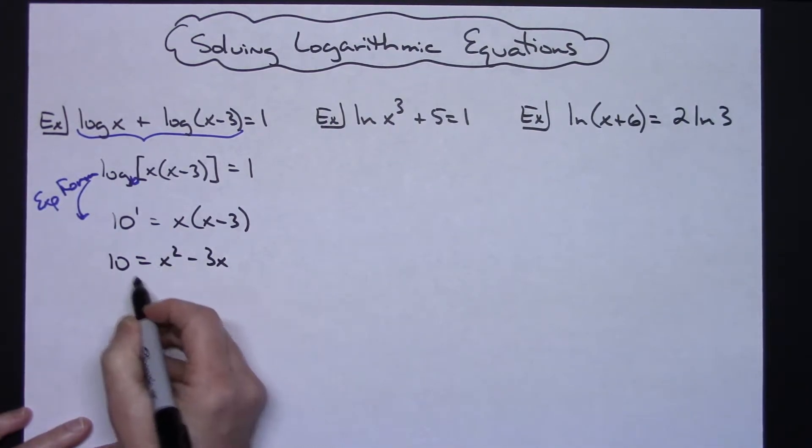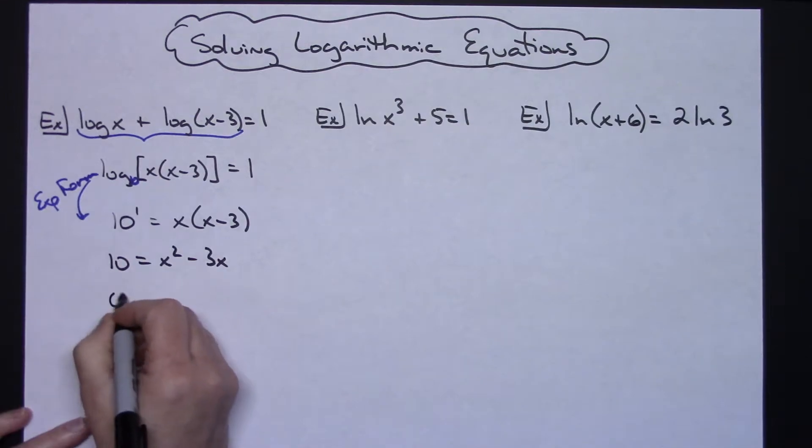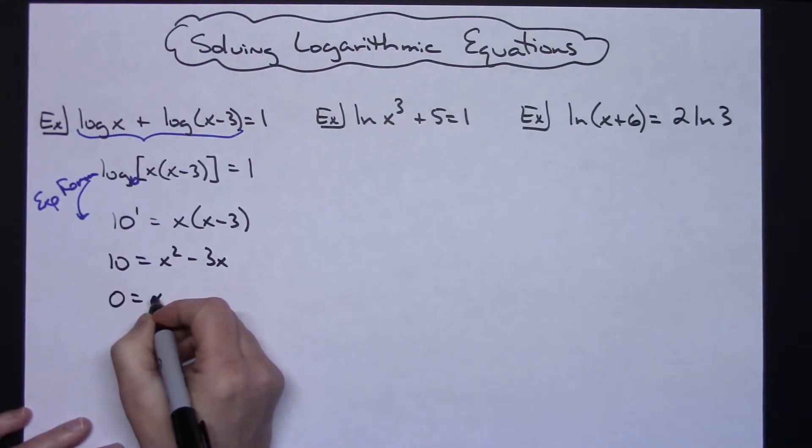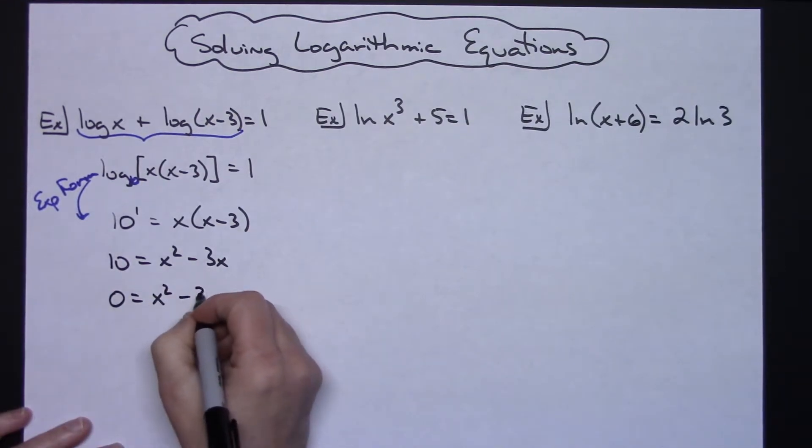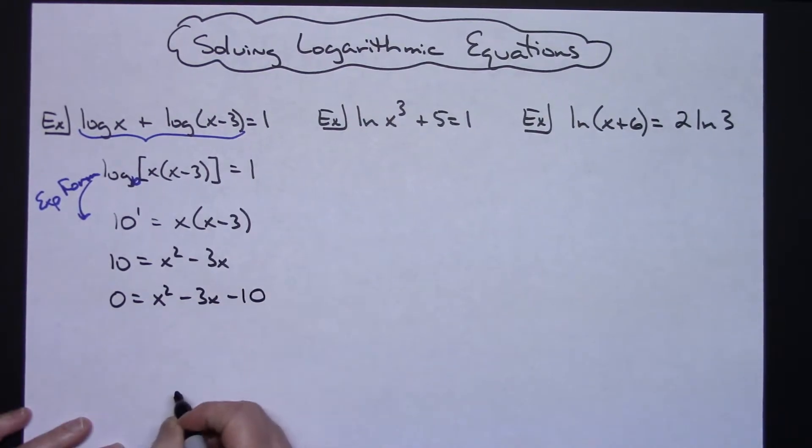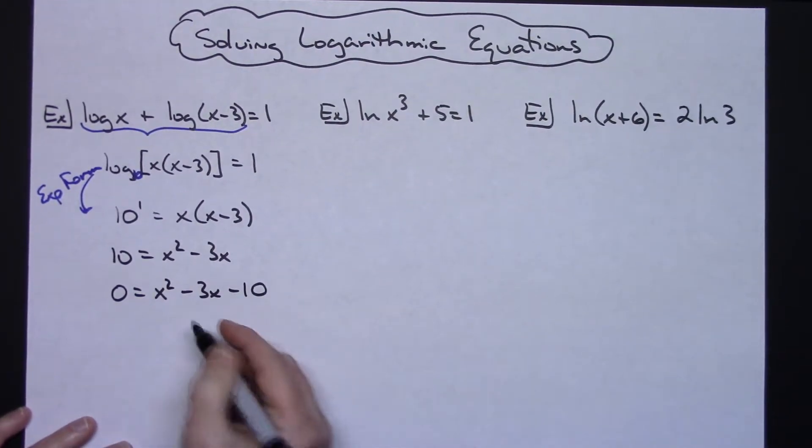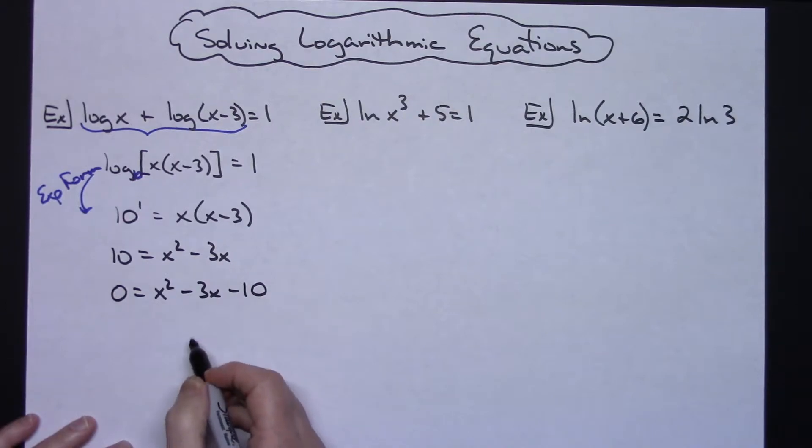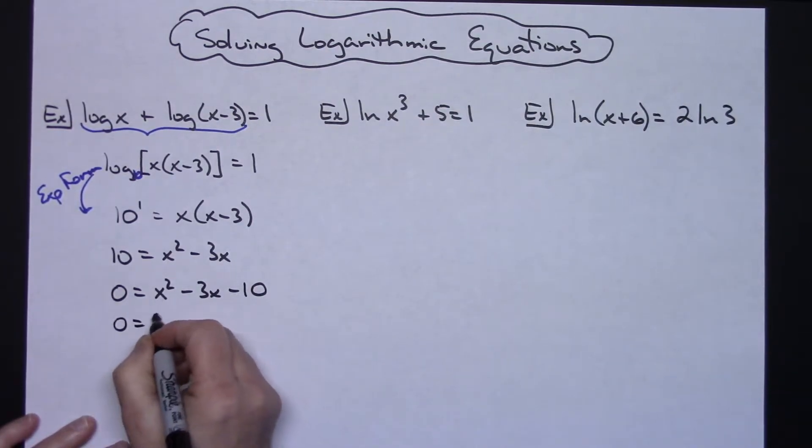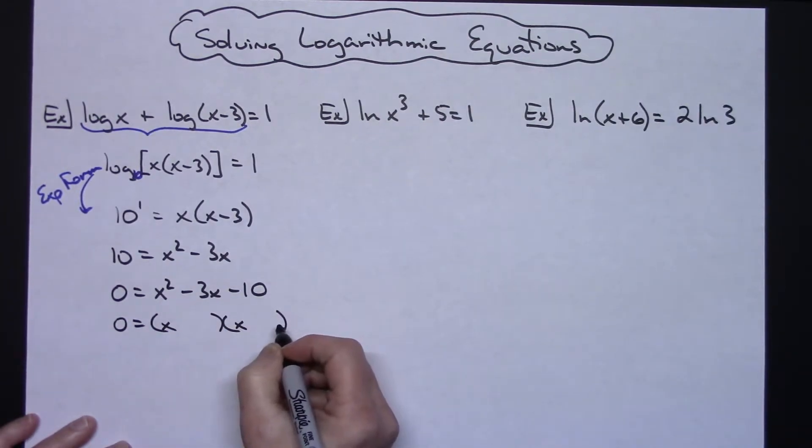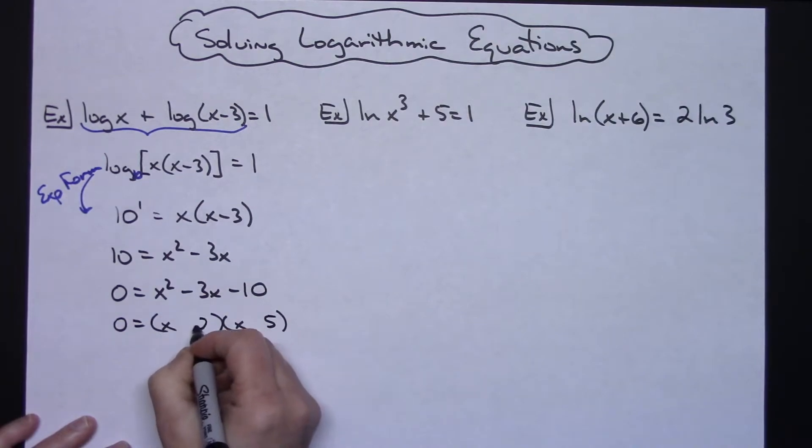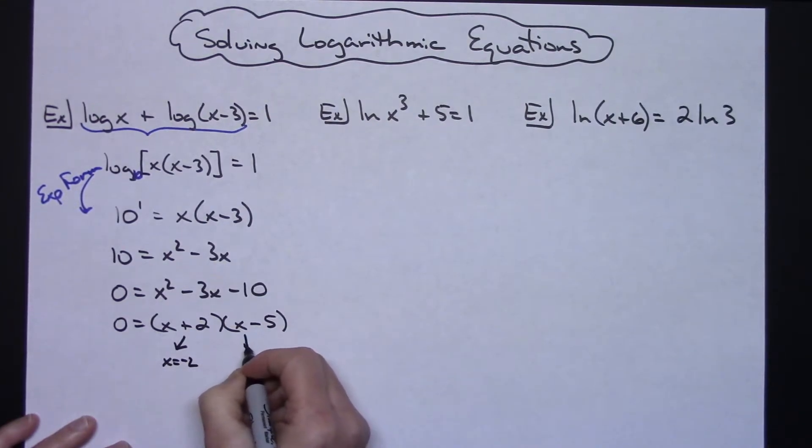I see now I have a quadratic, so I'm going to move that 10 over. 0 equals X squared minus 3X minus 10. If you are lucky at this point this is going to factor. If it does not, then you could do quadratic formula or completing the square. In this case though I'm pretty sure this one factors into an X and an X and a 5 and a 2 with a negative on the 5 and a plus on the 2.